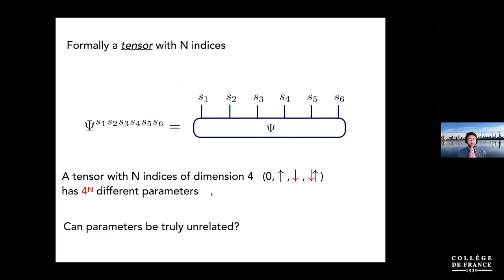But when you start thinking about things in terms of tensors, you can start thinking about tensor factorizations and tensor decompositions. Often tensors have a lot of structure that people are learning to exploit. The key question is: can these exponentially many parameters truly be unrelated, and if they are related, how can we take advantage of that on a computer?